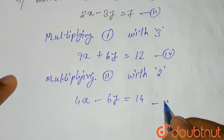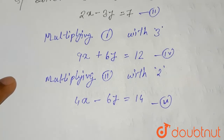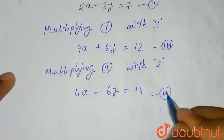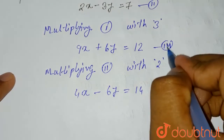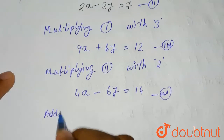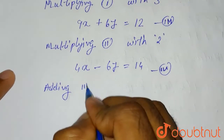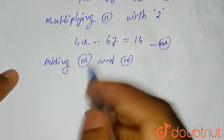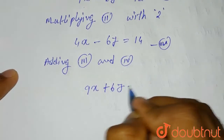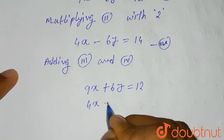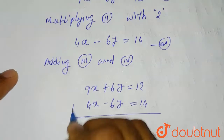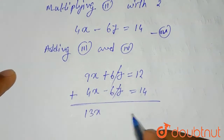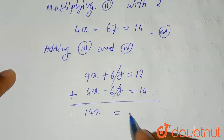Now adding equation 3 and equation 4: 9x + 6y = 12, and 4x - 6y = 14. When we add them, the 6y and -6y cancel out. So we get 9x + 4x = 13x, and 12 + 14 = 26.